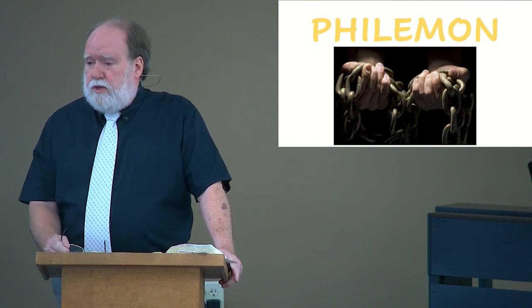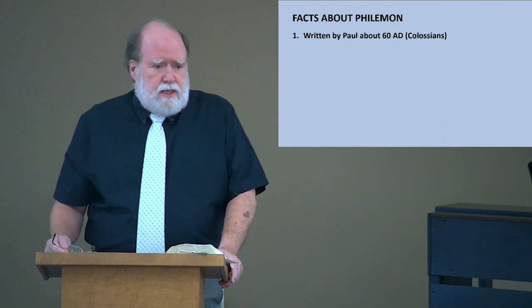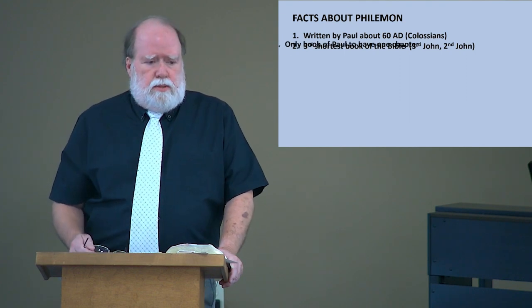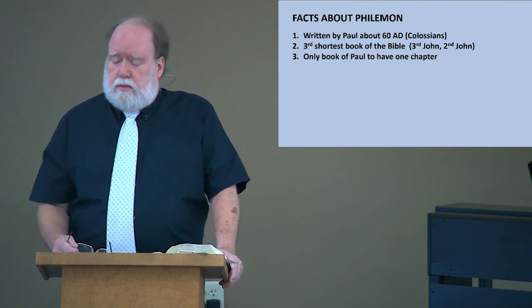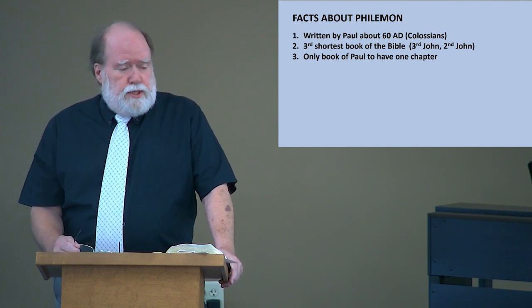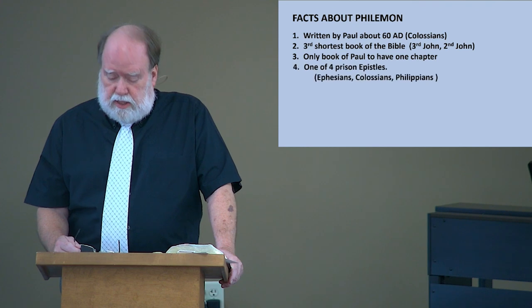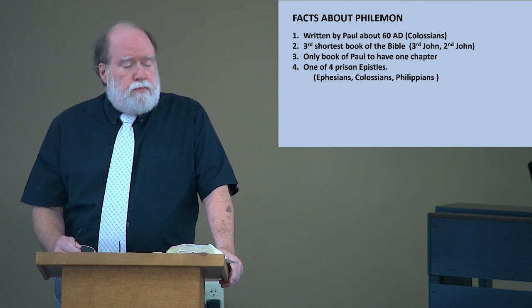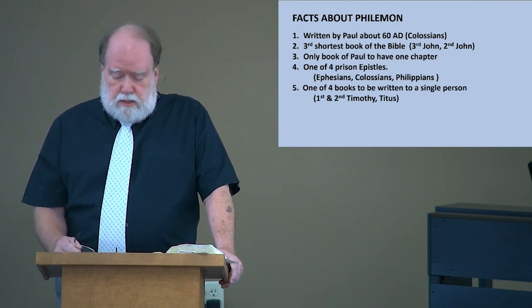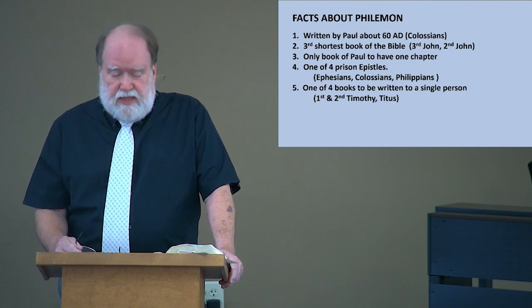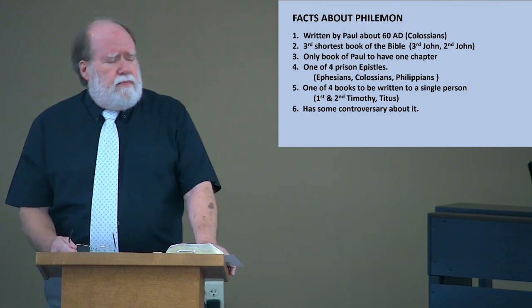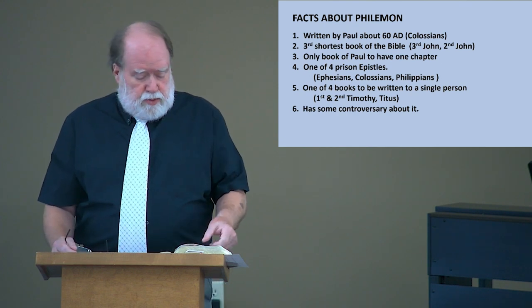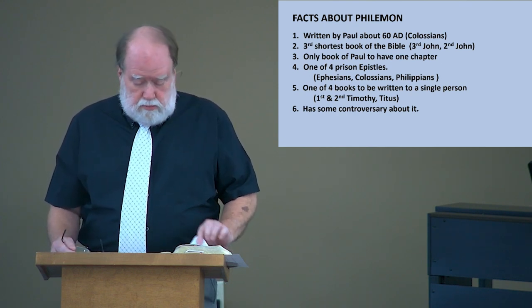Here are some facts about Philemon. Number one, it was written by Paul in about 60 AD at the same time he wrote the book of Colossians. It's the third shortest book of the Bible. Third John and Second John are the shortest. It's the only book that Paul wrote that is one chapter. It is one of four prison epistles: Ephesians, Colossians, Philippians, and Philemon. It is one of only four books to be written to a single person: First and Second Timothy, Titus, and Philemon. And Philemon has a little bit of controversy about it, which we will take a look at as we go through it.